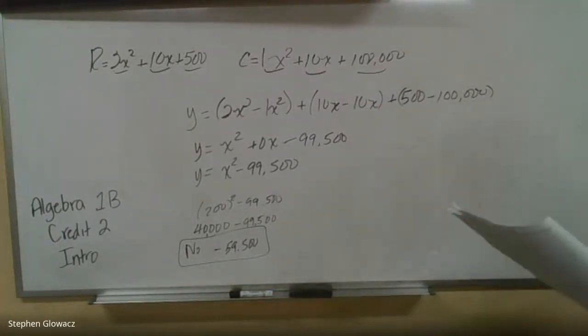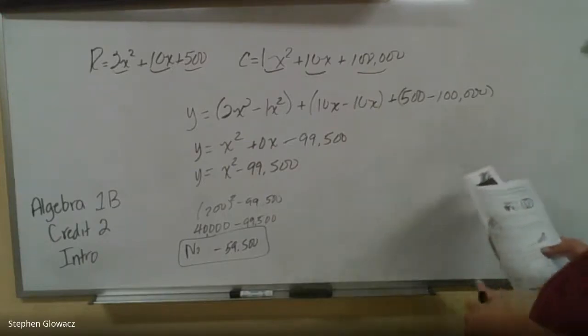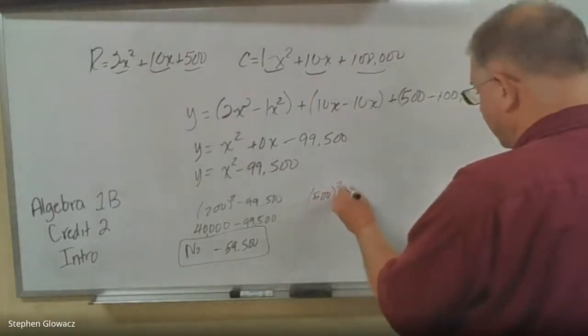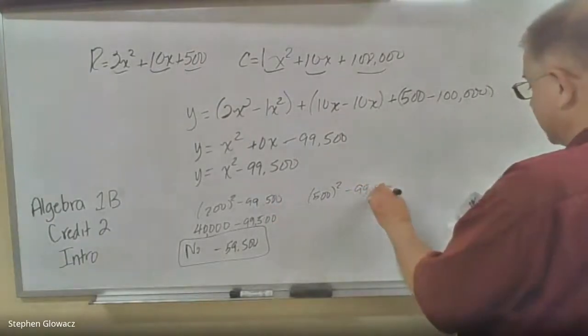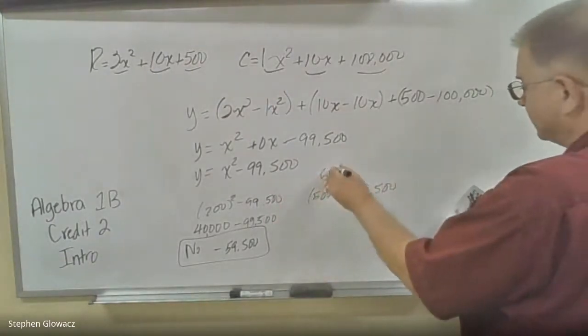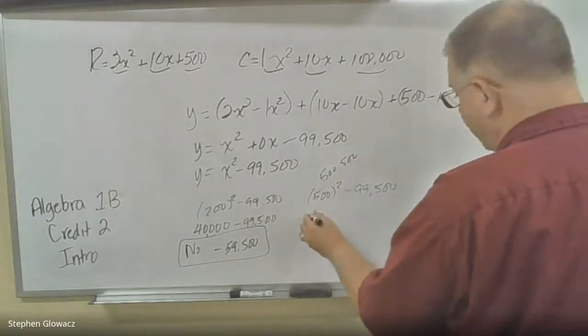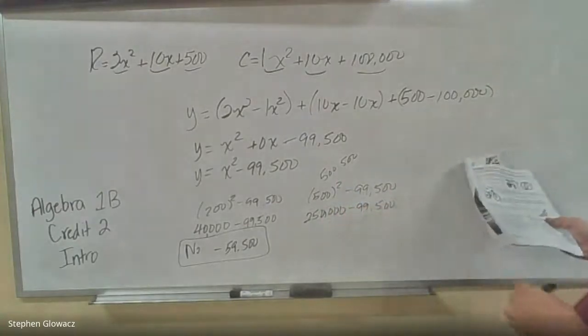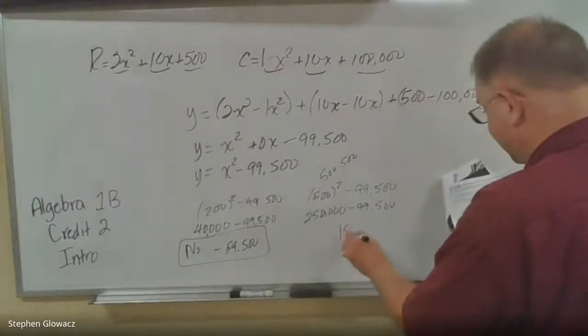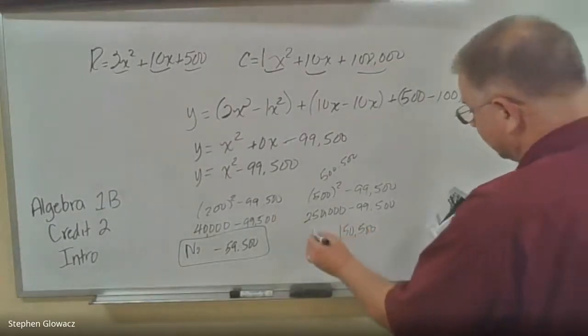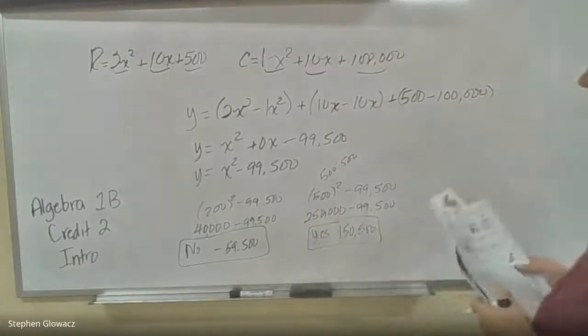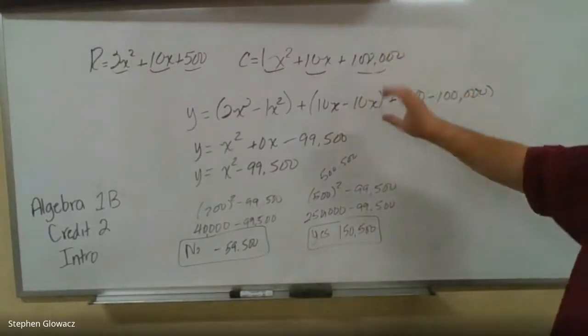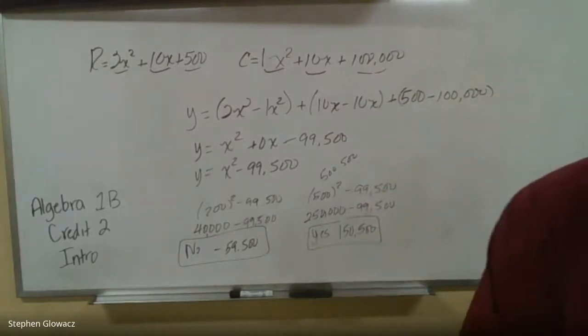Then the last question on the page says, if you manufacture and sell 500 bicycles in May, will your company make a profit for the month? So instead of 200, we're going to plug in 500 for X. 500 squared, 500 times 500 is 250,000. Minus the 99,500 gives us a positive 150,500. So that's a plus. So yes, we made money in May. So there's kind of a bit of an application of polynomials and a hint of what to come when we get into adding and then evaluating polynomials.